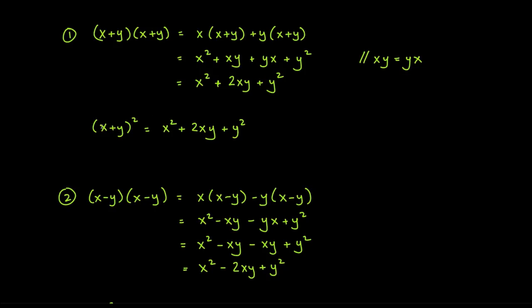Next, multiply the two terms around the plus sign — x times y — and double that product, giving 2xy. Then square the last term to get y squared. This works because multiplying (x + y)(x + y) always gives x² + 2xy + y², so knowing this formula lets you go directly to the answer.